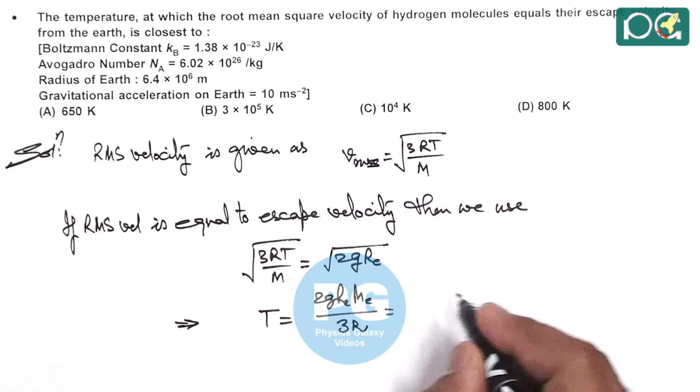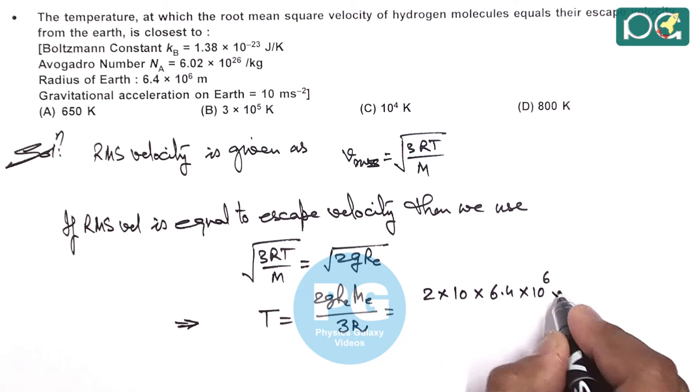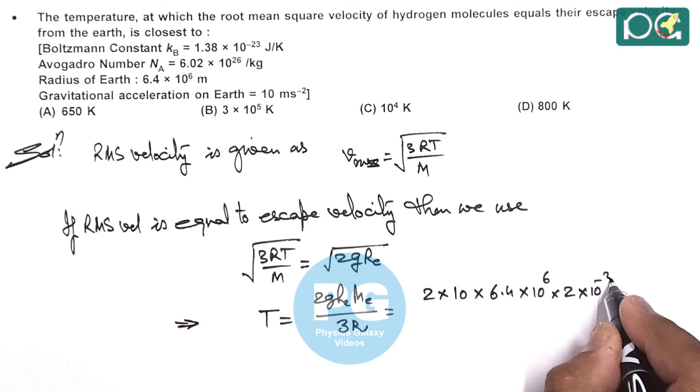On numerically substituting the values this gives 2 multiplied by G is 10, R_E is 6.4 into 10 to power 6, molar mass of hydrogen is 2 into 10 to power minus 3.